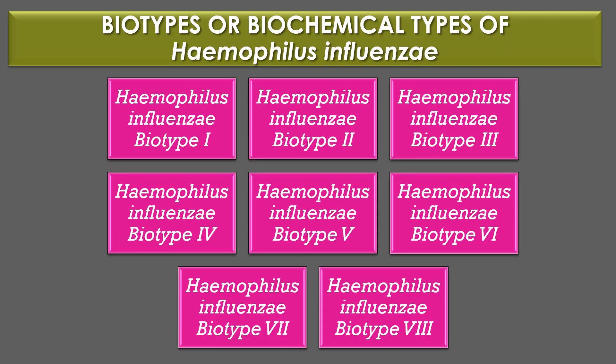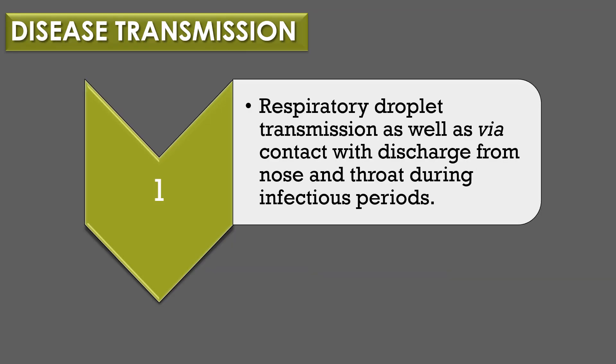Biotypes of Haemophilus influenzae: The species is subdivided into eight biotypes. Regarding transmission, respiratory droplet transmission as well as contact with discharge from nose and throat during the infection period is the major mode of transmission of Haemophilus influenzae infection. The portal of entry is most commonly the nasopharynx region.